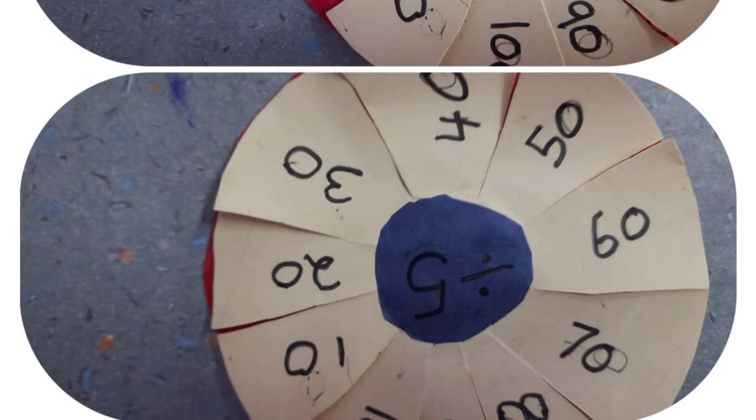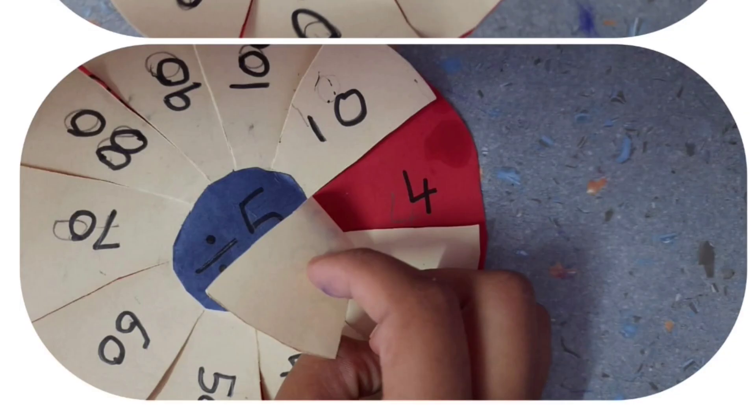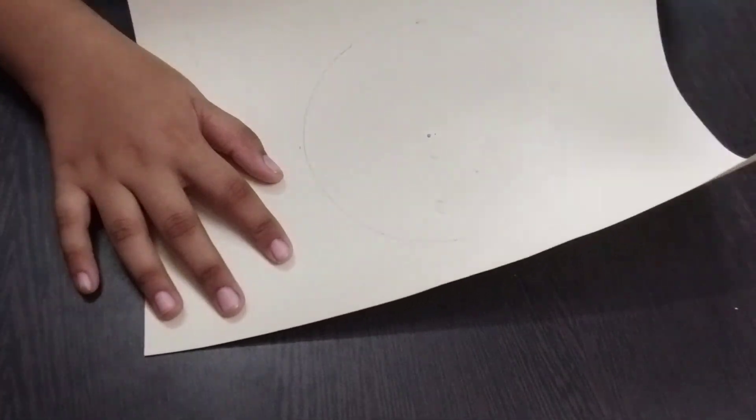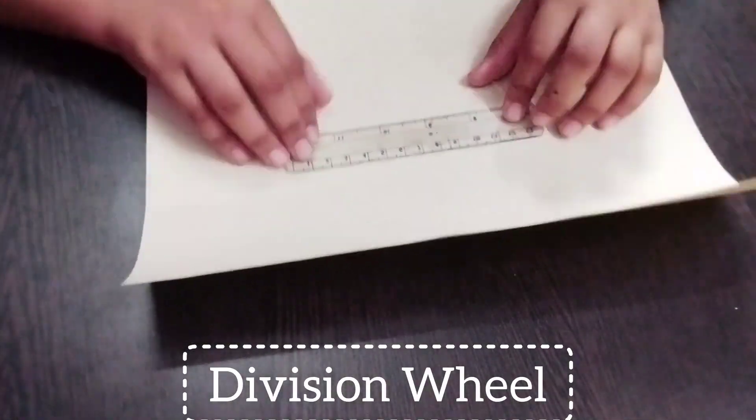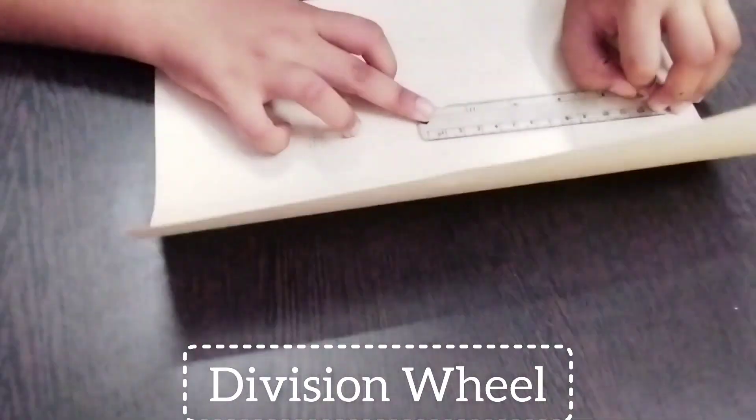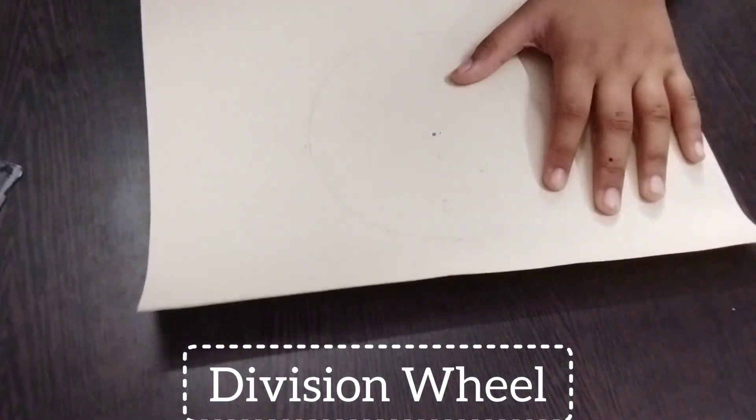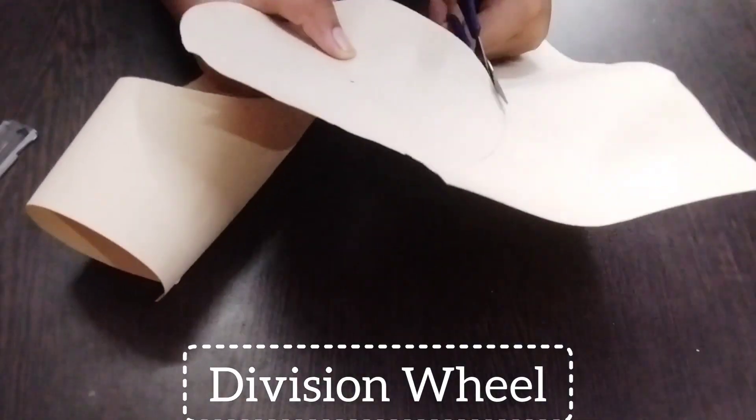Hi friends, welcome back to my channel Kids Learning Sister Zone. Today we are going to do a project on mathematics - a working model of a division wheel. Let's start. Take an A4 sheet and draw a big circle.